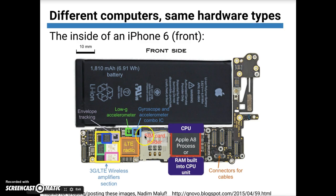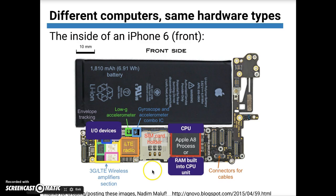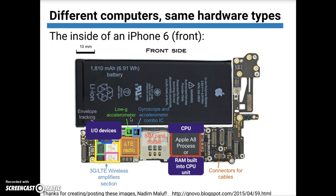You don't need to know what all of these other pieces are necessarily, but they're all I/O devices. The accelerometer is an input device that tells the CPU the kind of movement that's happening physically in the phone. So when you move, the accelerometer takes some of that information and passes it back to the CPU — so it's an input device.